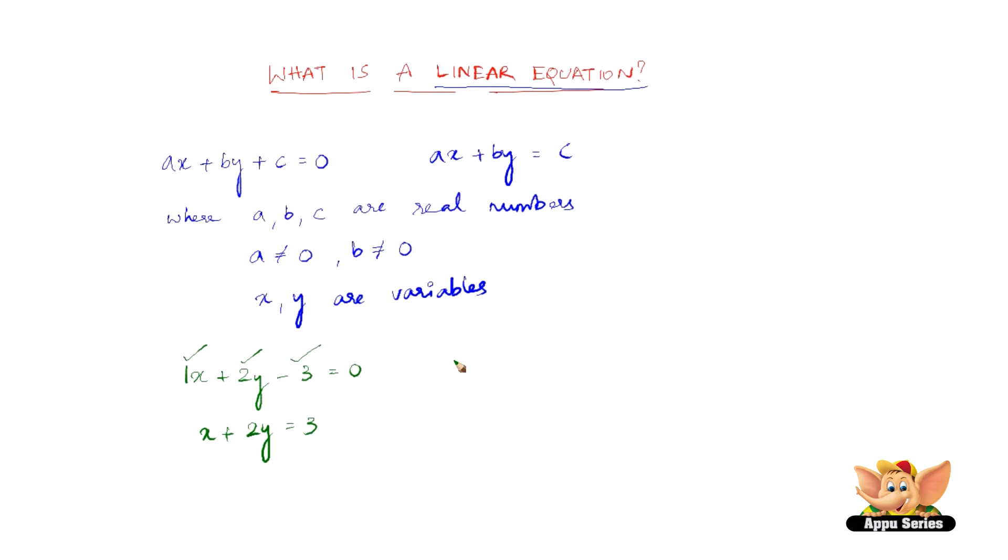So let us quickly consider another example: 7x minus 5 equals 2y. Now this is not a linear equation straight away, I mean it is, but then we can write this as 7x minus 2y minus 5 equal to 0 or 7x minus 2y equals 5.